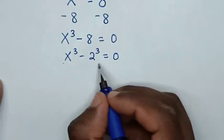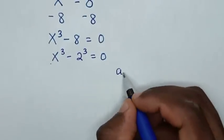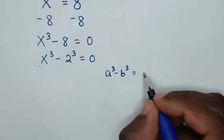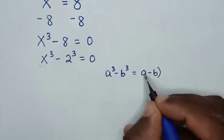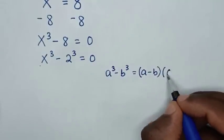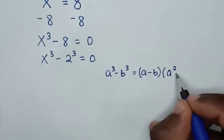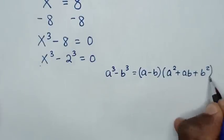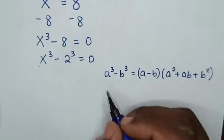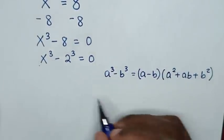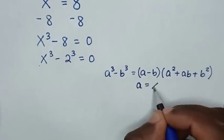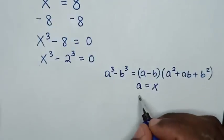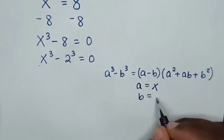This part is in the form of a³ - b³ = (a - b)(a² + ab + b²). When you compare a³ and x³, then a = x. And when you compare b³ and 2³, then b = 2.